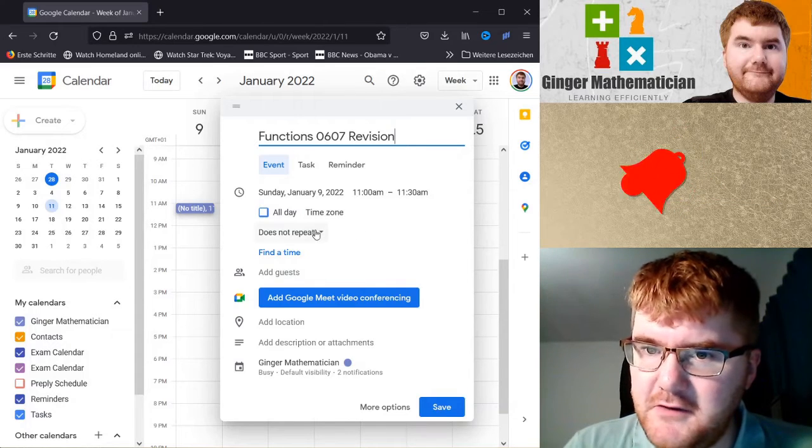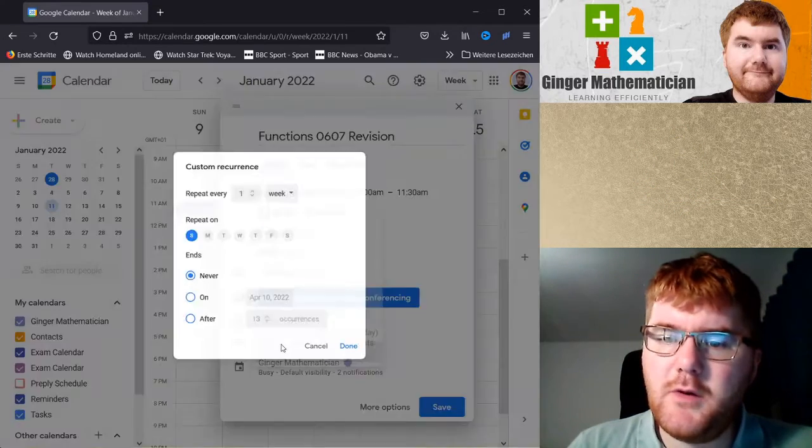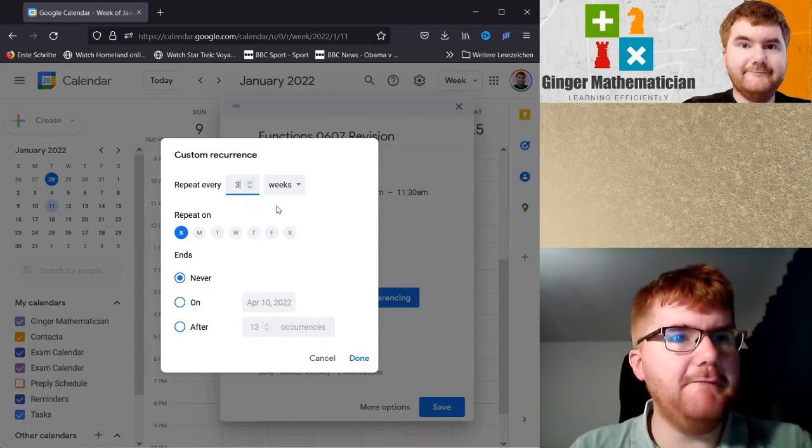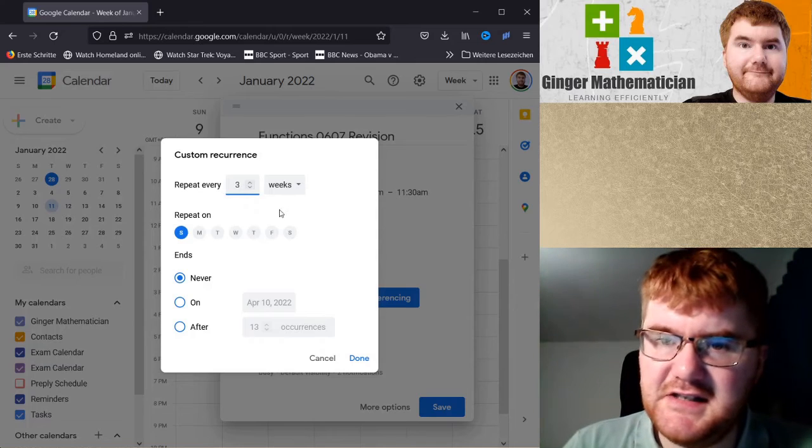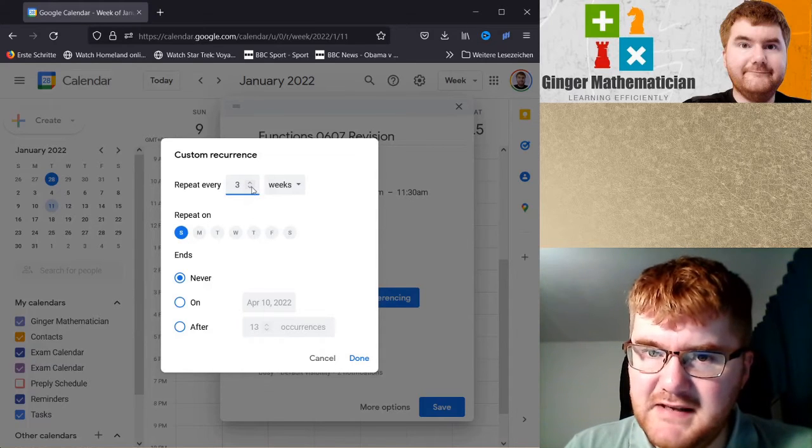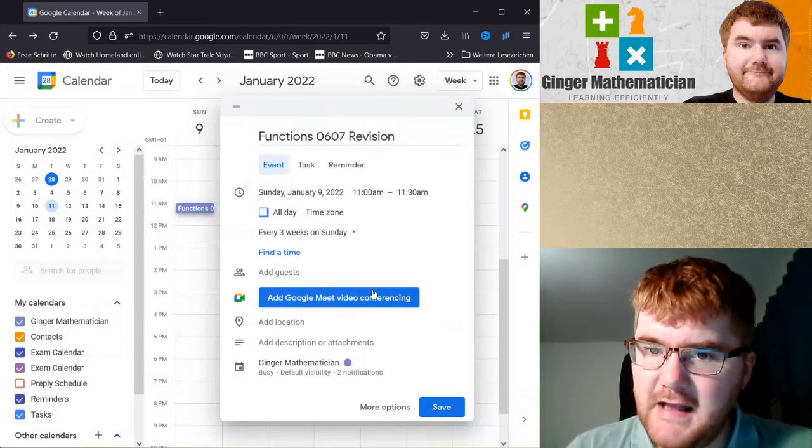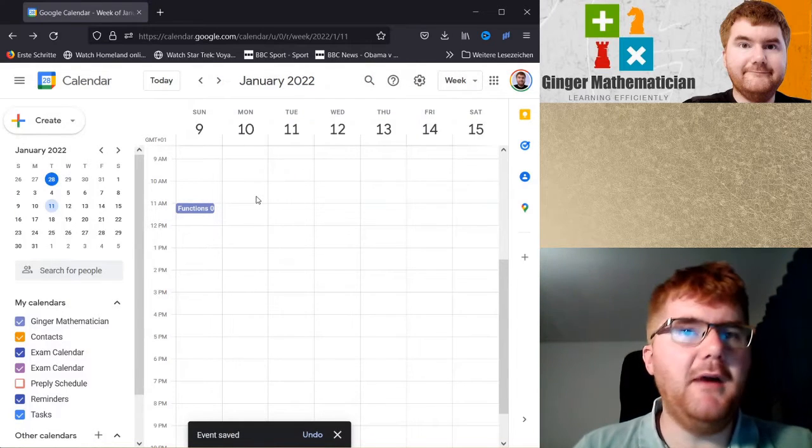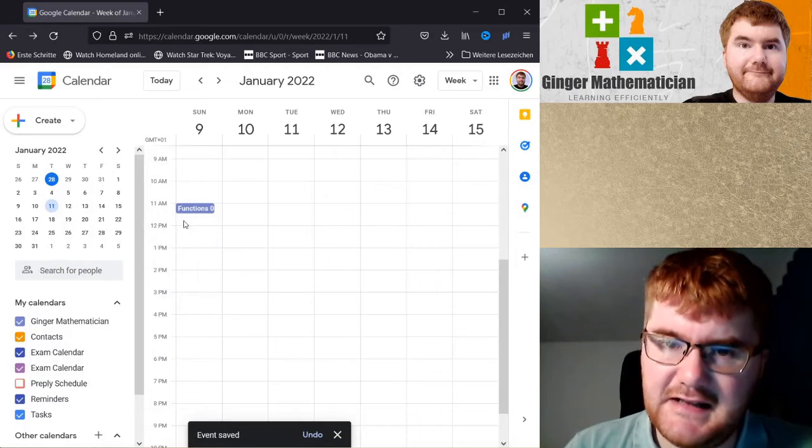Then what we're going to do is look at the repeating. So we want to repeat this reasonably often, but not every week, because it's not one of the very important topics like GDC skills. So I'm going to put repeats every three weeks, done and then save. And then it's in my calendar. Make sure that my phone is also synchronized to that.